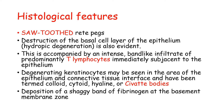Histologically, lichen planus shows sawtooth-shaped rete pegs and destruction of the basal cell layer of the epithelium. This is accompanied by an intense band-like infiltrate of predominantly T lymphocytes immediately subjacent to the epithelium. Degenerating keratinocytes may be seen at the epithelium-connective tissue interface and are termed colloid, cytoid, hyaline, or Civatte bodies. There is also deposition of a shaggy band of fibrinogen at the basement membrane zone.